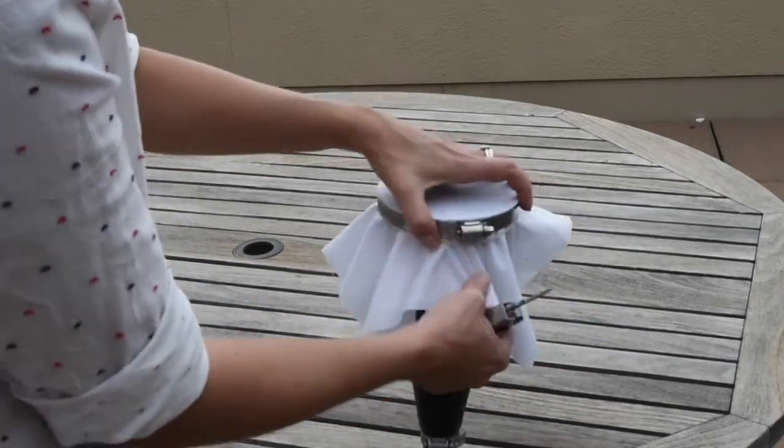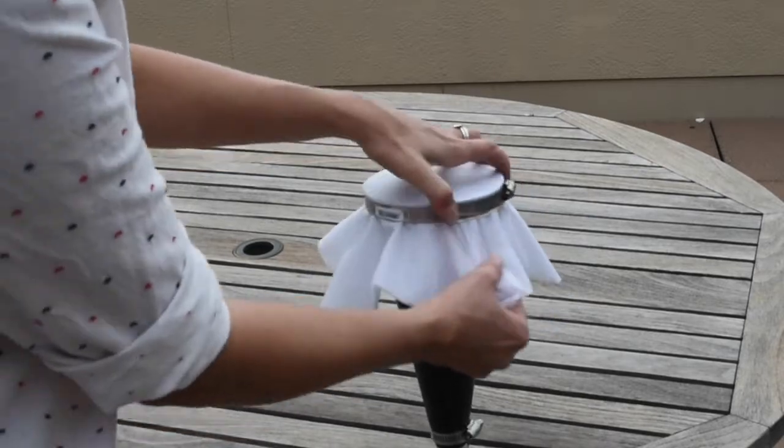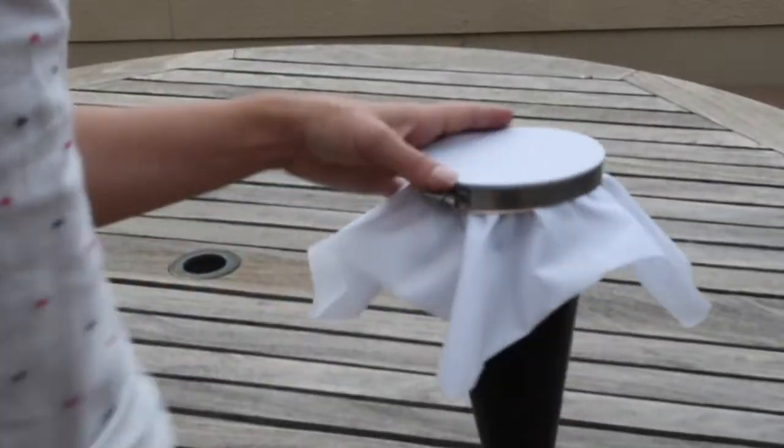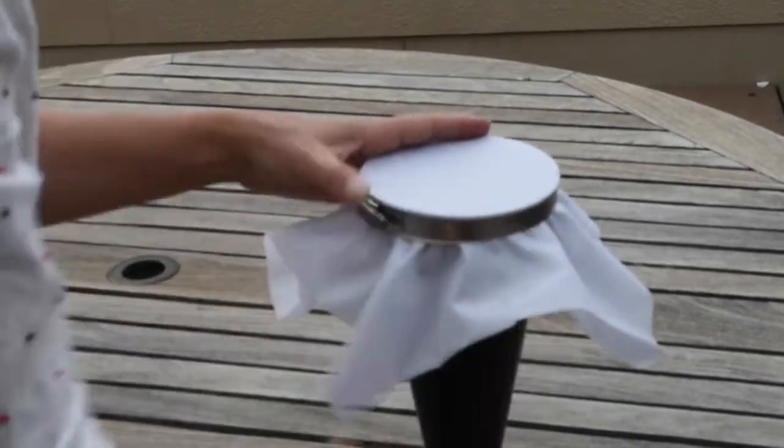Gently pull down around all the loose edges of the material so that the screen ends up flat and taut over the funnel's wide opening. This is an iterative process. You'll need to pull down on the material after each turn of the screw to keep it taut.